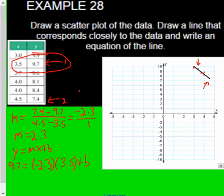Negative 2.3 times 3.5 is negative 8.05 plus b. I'm going to add 8.05 to both sides.